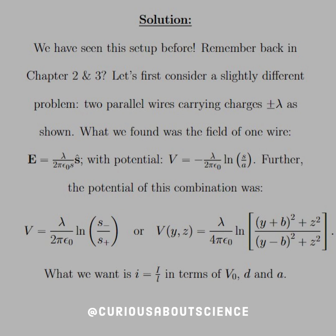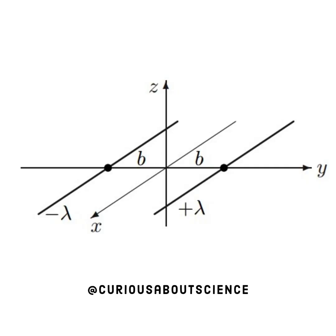And so, we change it to two parallel wires carrying charges plus or minus lambda, as shown. And we'll go ahead and redraw that out. And you see, we have now a reframed question, separated by a distance B apart, which again, we know is 2D. And then we have plus or minus lambda. So, we have seen this before.